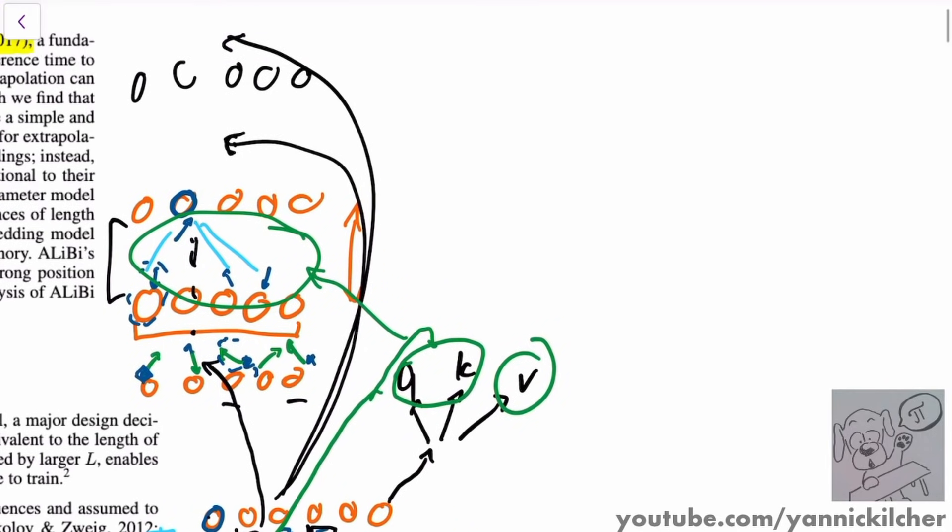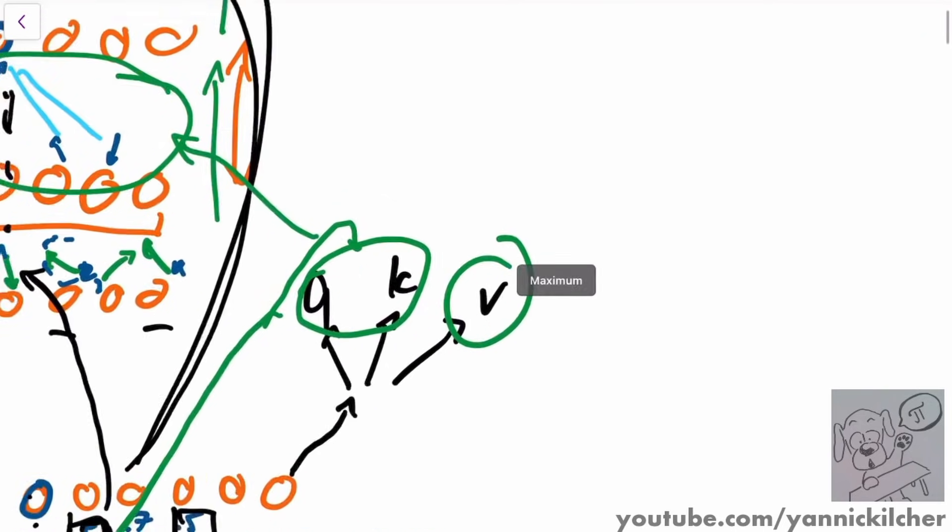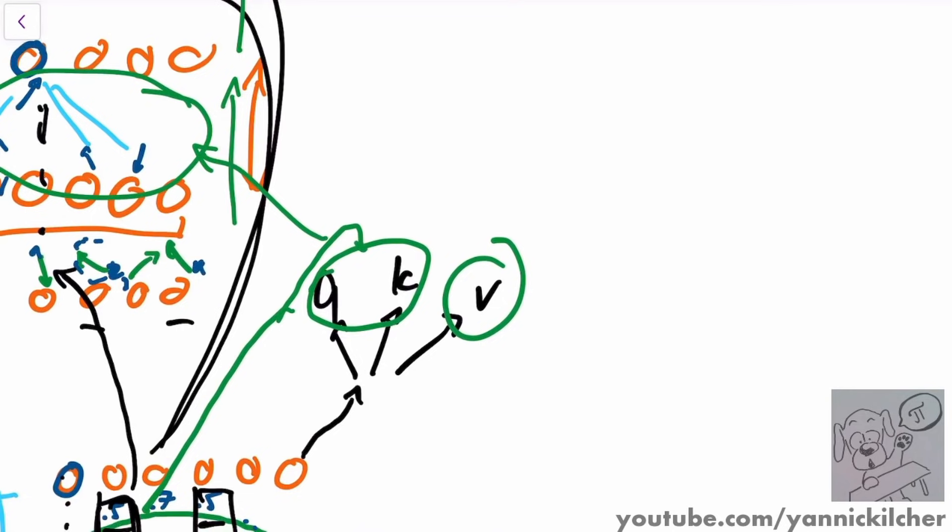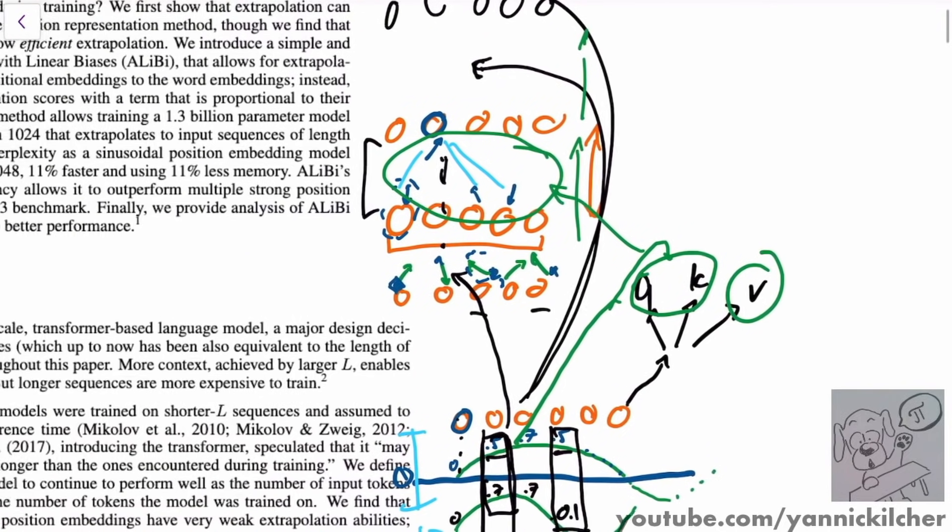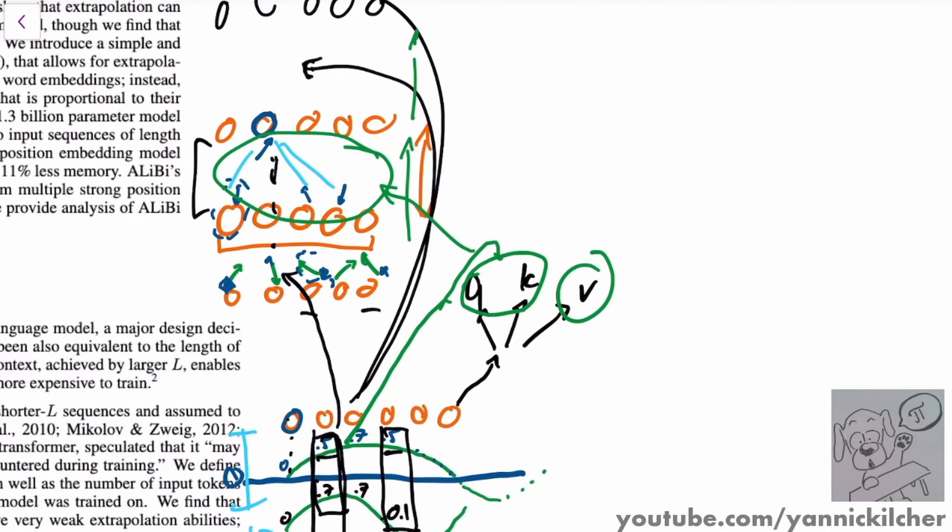If I inject it into the query and the key, I influence how information is routed here, that influences that. But then the actual information that's transmitted to the next layer, those are the values. And I do not inject the position information into the values at all. Therefore, the information that flows from layer to layer to layer has no positional information in it at all, at least not directly, because the value, the values remain information of position, position information free, we inject the position information at every layer into the queries and the keys or the computation that we do with them.